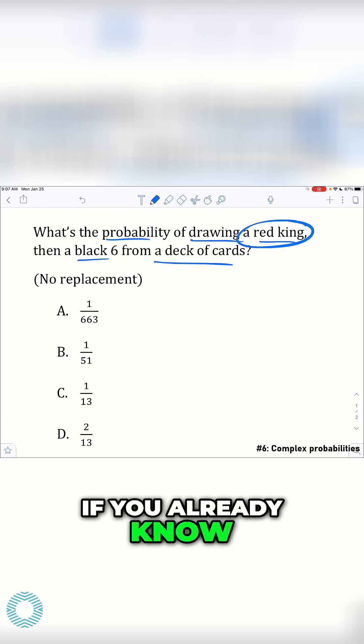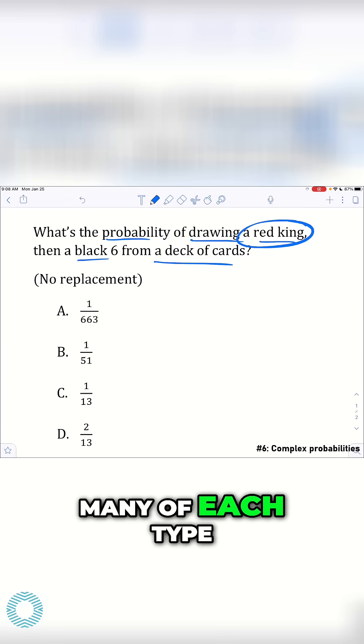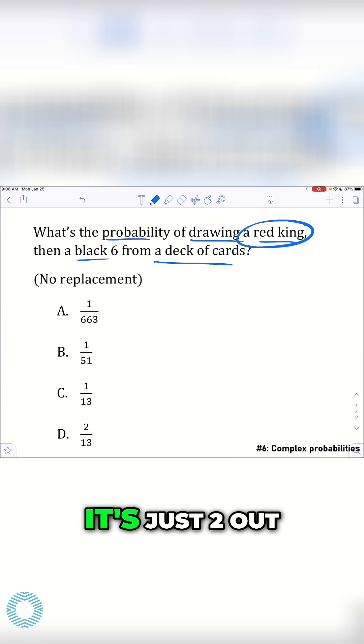First of all, what's the probability of drawing a red king? If you already know what a deck of cards is and how many of each type there are, then you know that it's just 2 out of 52.